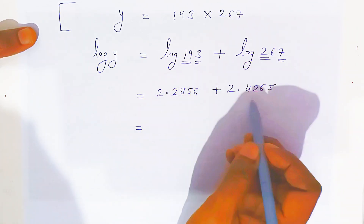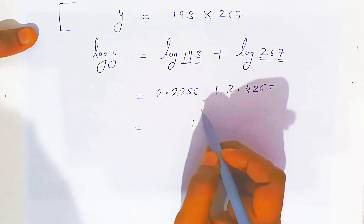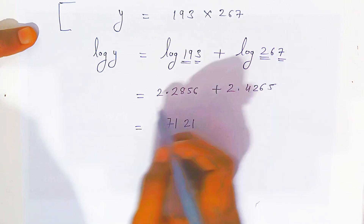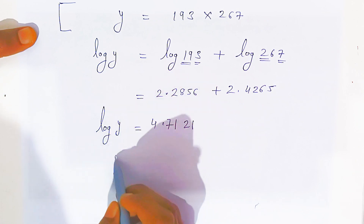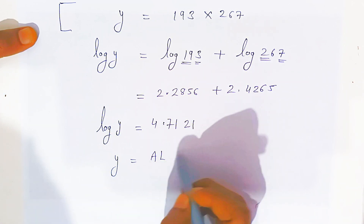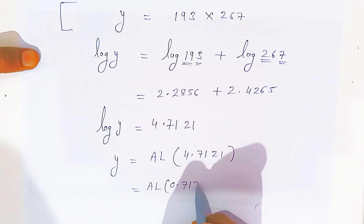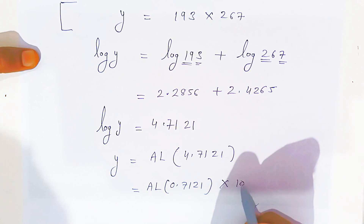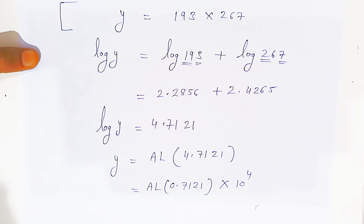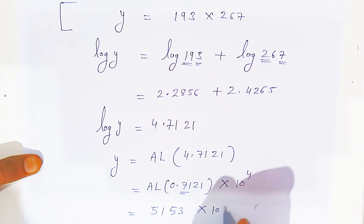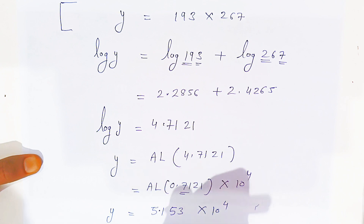Adding the two log values: 2856 plus 4265. Adding digit by digit gives log y equals 4.7121. Taking the antilog: antilog of 0.7121 with characteristic 4 means 10 to the power 4. In the antilog table, row 71, column 2 with mean difference 1 gives 5153. So y equals 5153 times 10 to the power 4.